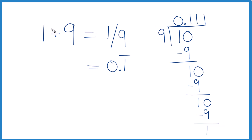So in answer to our question, 1 divided by 9, you could call it the fraction 1 ninth, or the decimal 0.1 with that bar to show the 1 is repeating. This is Dr. B. Thanks for watching.